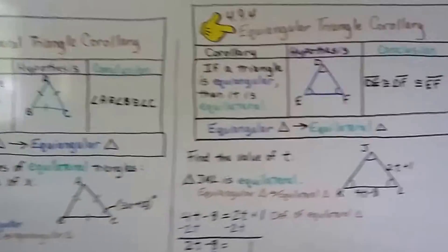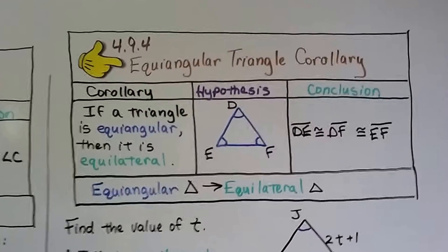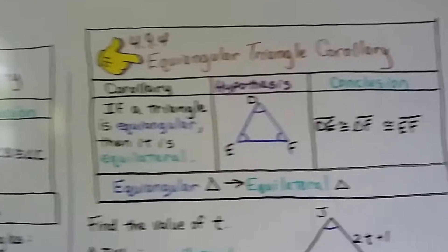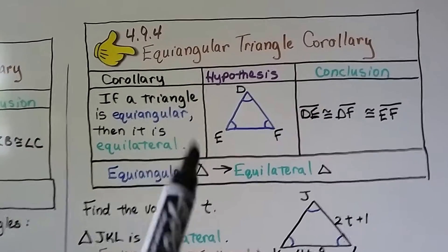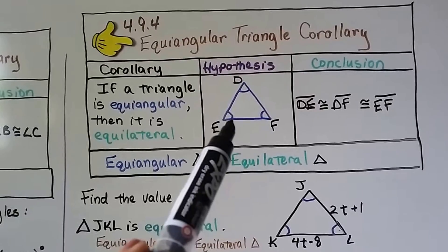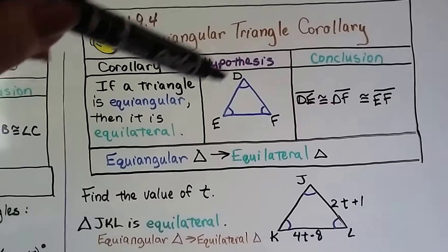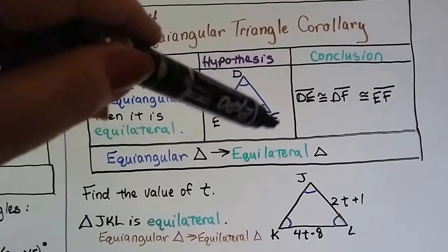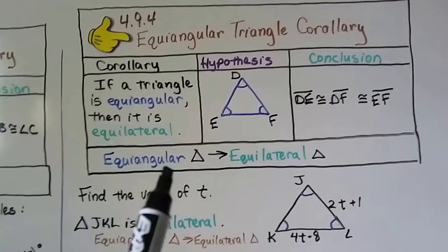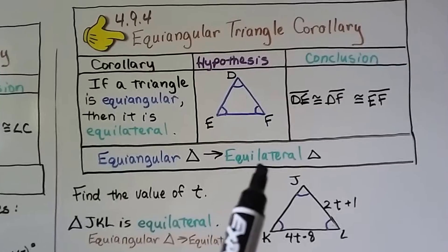Here's the equiangular triangle corollary. It says if a triangle is equiangular, then it's equilateral. So it's just like this one except now if it's equiangular, it's equilateral. So we have a triangle with three equal angles, three congruent angles. That means the sides are congruent. DE is congruent to DF, which is congruent to EF. And you can write in a proof equiangular triangle, therefore equilateral triangle.